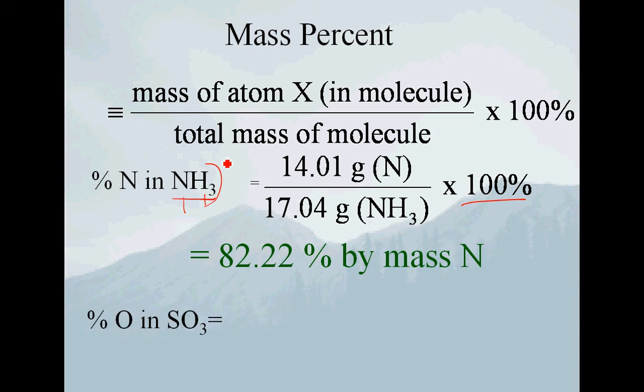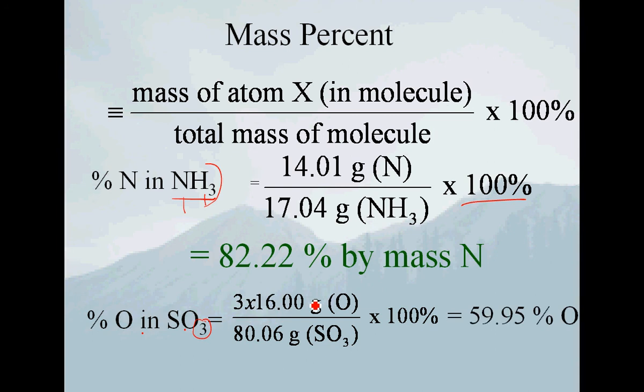If we look at the percent oxygen in sulfur trioxide, the only difference here is that we have to make sure that we account for all of the oxygen in our compound. So if I want to know the percent mass of oxygen in sulfur trioxide, I actually have to take three times the mass of the individual 16, because there's three oxygens. So that's 48 divided by 80 grams for the total mass, and I get a mass percent of 59.95. And again, since this compound only contains sulfur and oxygen, it'd be easy enough for us to figure out the 40.05 percent by mass sulfur.